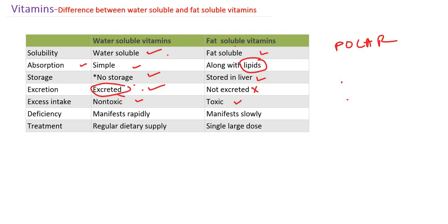Water-soluble vitamins are generally not stored — they are excreted. So their deficiency manifestations occur very early. Fat-soluble vitamins, on the other hand, have deficiency features that appear very slowly because they are stored in our body.